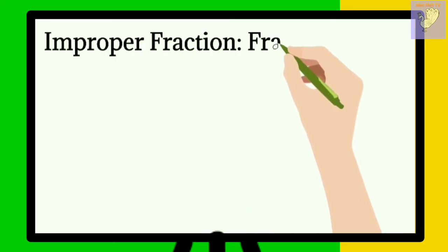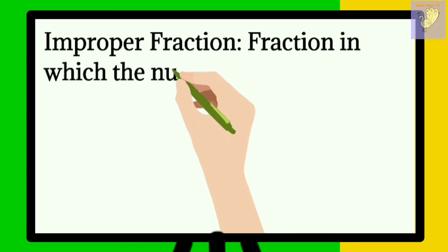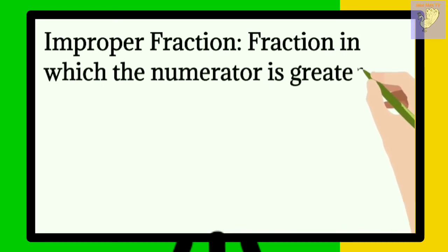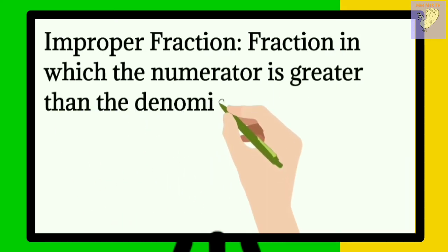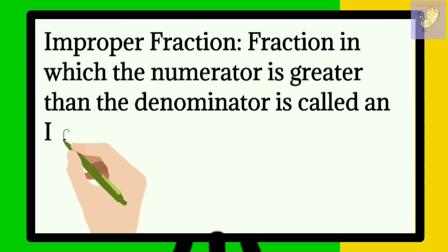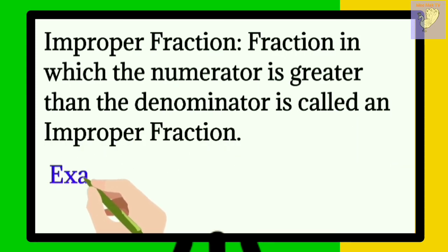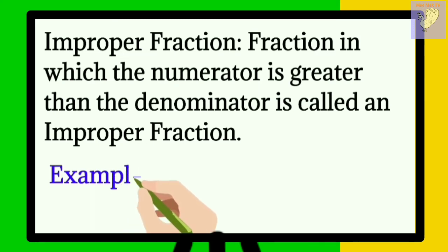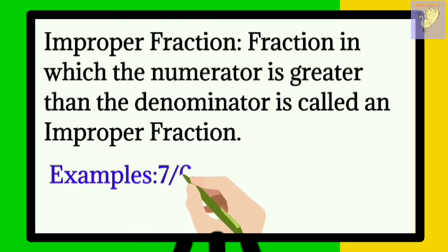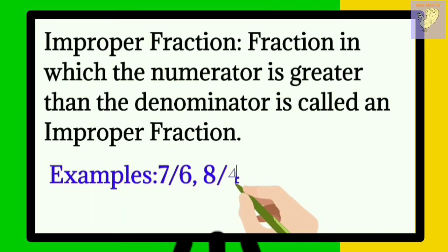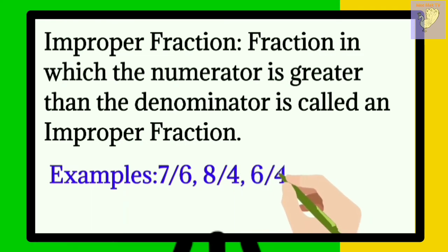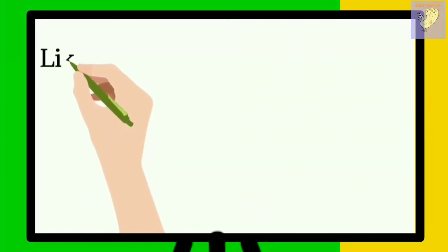Number two is improper fraction. A fraction in which the numerator is greater than the denominator is called an improper fraction. Examples of improper fractions are 7 upon 6, 8 upon 4, and 6 upon 4. In each case, the numerator is greater than the denominator.